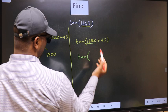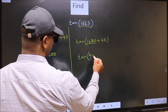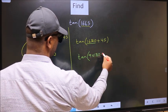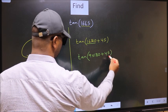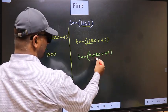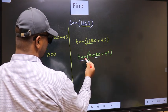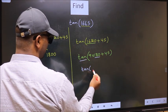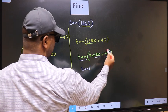In place of this, we should write 9×180+45. Here we have 180, so tan is not going to change. It will remain tan, and inside we get this angle 45.